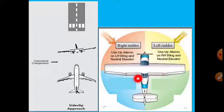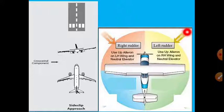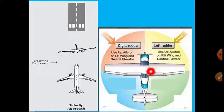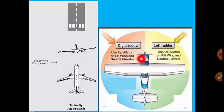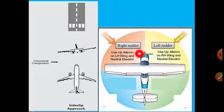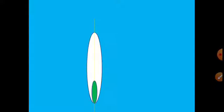In a sideslip crosswind landing, wind comes from one side and the directional stability would normally align the aircraft toward the wind. The vertical stabilizer creates a moment turning the aircraft into the wind. The pilot uses left rudder to counteract this starboard moment, keeping the nose aligned with the runway centerline throughout the approach and landing. These are all the rudder requirements.